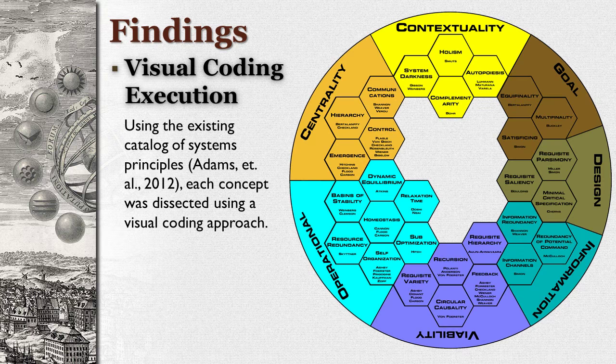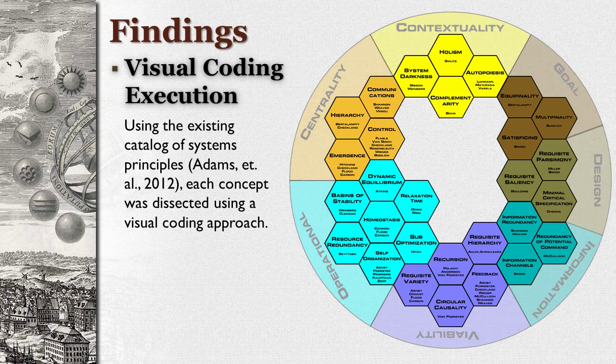The diagram shown here contains the collection of system principles developed by Adams, Hester, Bradley, Myers, and Keating. Each principle is represented by a hexagonal block, and the principles are grouped together into axioms that define the relationship that exists between them. Because this research did not want to necessarily be bound by the existing relationships, we have ignored the axiomatic groupings and have elected to focus only on the principles themselves.